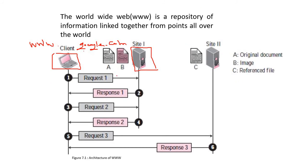Whenever any client puts a request, it will go to the server of that particular URL. The entire thing — like www.google.com — is known as a URL: Uniform Resource Locator. Whenever any client types a URL, it goes directly to the website server, and from there the server responds with that particular file. The client is then able to view google.com.